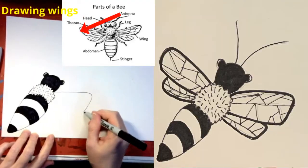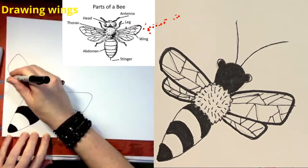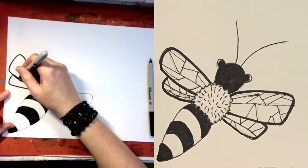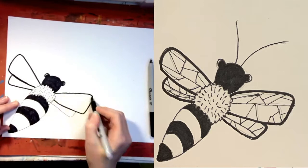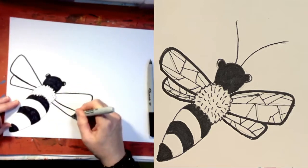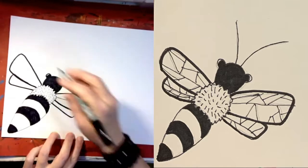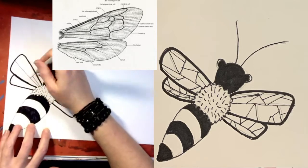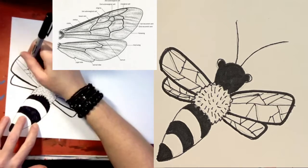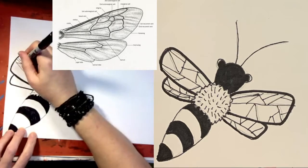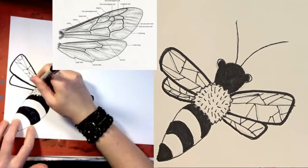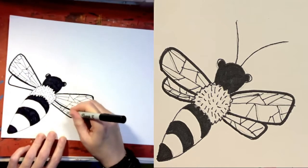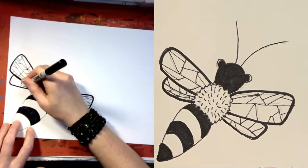Now draw the bee's wings. From the thorax, draw first the front wing and then the hind wing. Bees have two sets of wings. I'm outlining my wing shapes with a fine point sharpie, then dividing sections of the wing into different shapes. Using an ultra fine point sharpie, I'm dividing the inside of the wings into more shapes — there are so many different sections inside a bee's wing. Bees' wings are made up of a material called chitin, which is a lot like keratin, the material that makes up your fingernails.